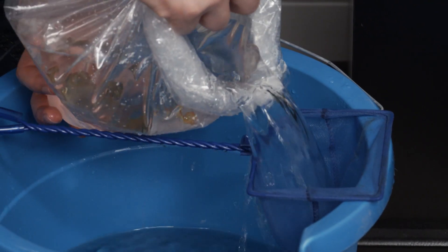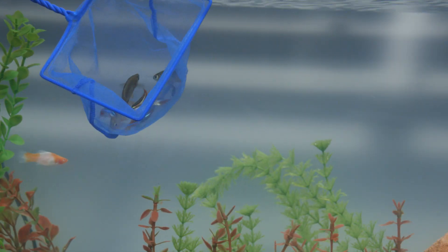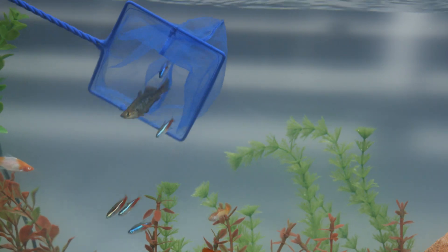Finally, to transport your fish from the bag to your tank, gently pour the bag through a net over a bucket. Then place the net into your tank and allow the fish to swim out on their own.